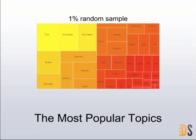This is another fun experiment. We analyzed a 1% random sample of the entire firehose and looked at the topics mentioned most frequently. Not surprisingly, food, games, weather, automotive, and sports are fairly popular topics — just like in real life. Now imagine combining this with location data — a lot of interesting patterns could emerge.